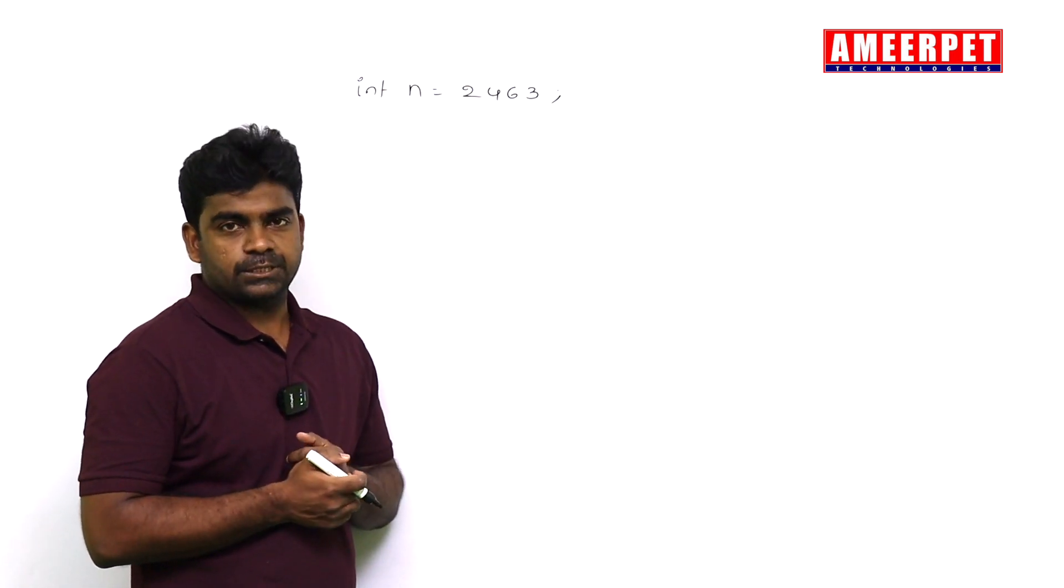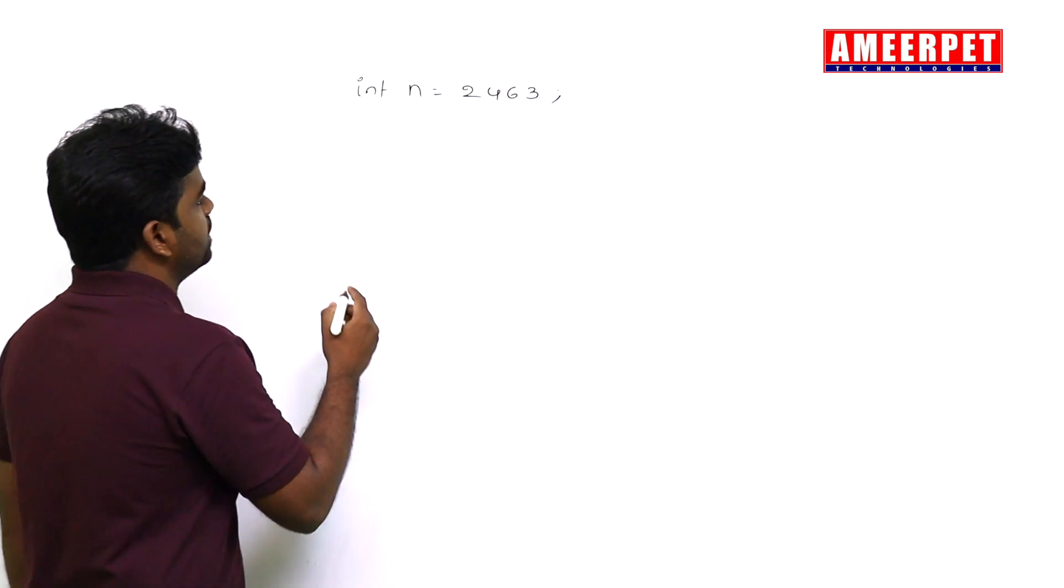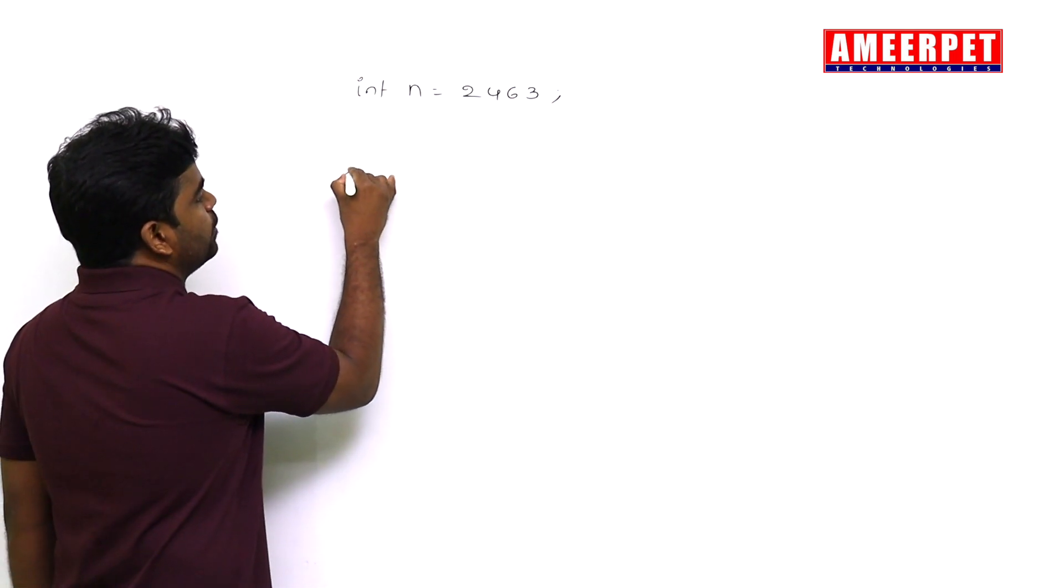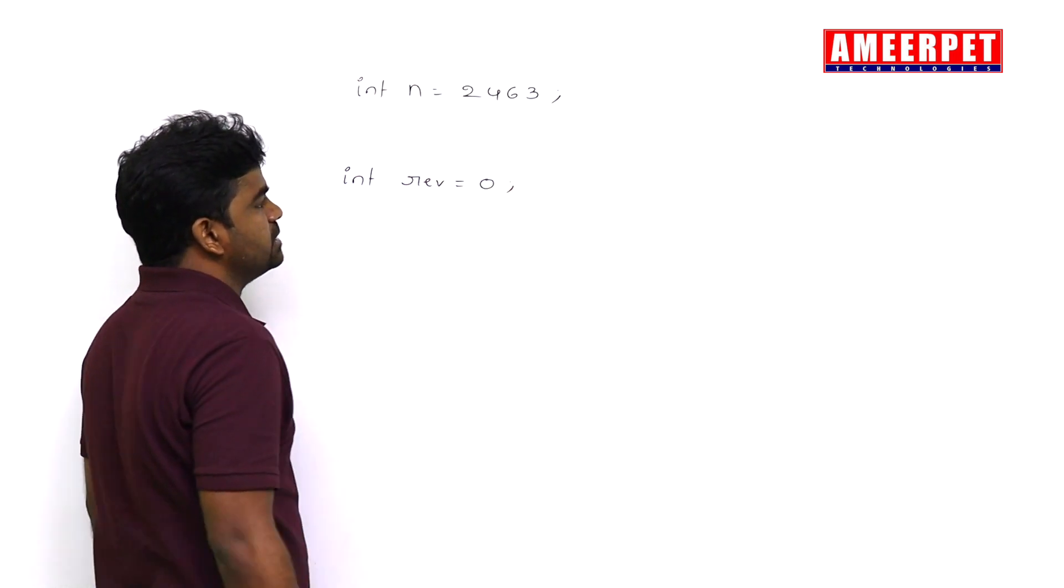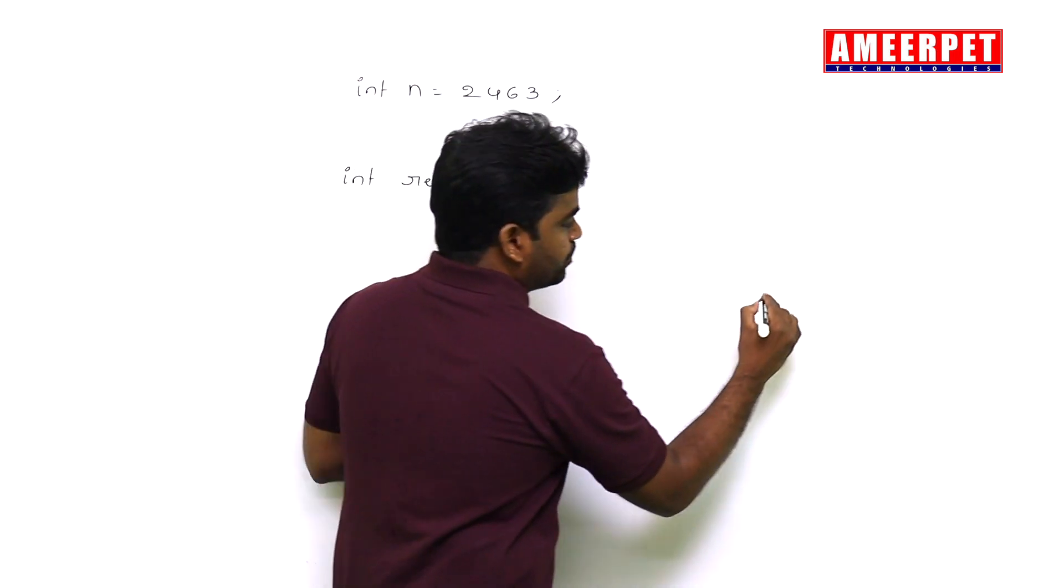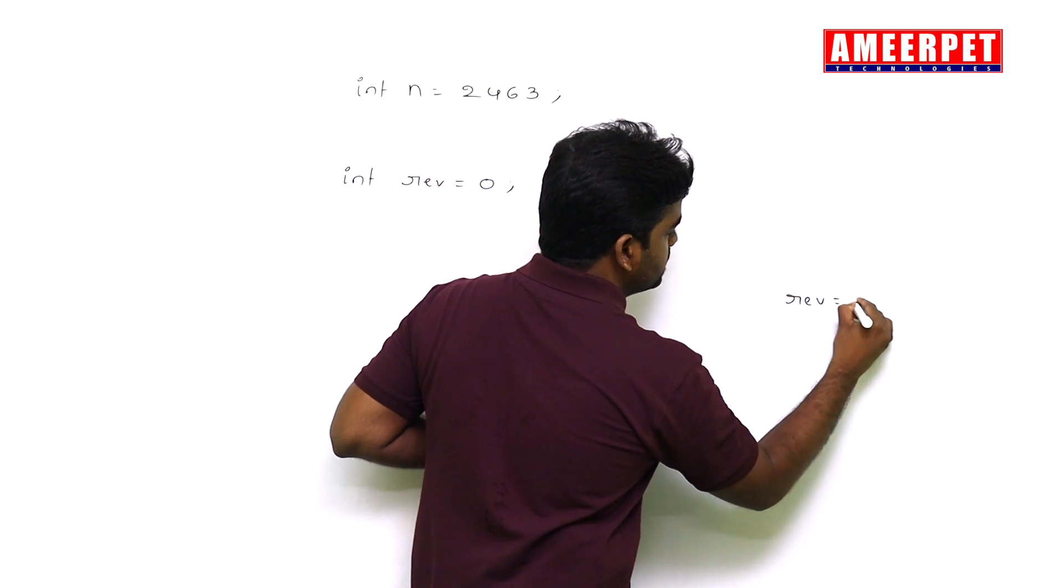First I will write the code. I am taking one variable reverse rev, initialize with zero. Consider the reverse value is zero.